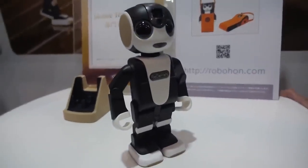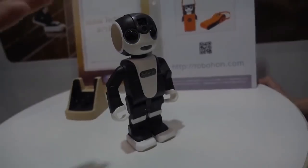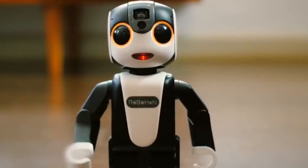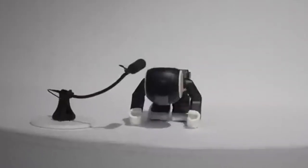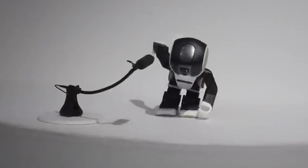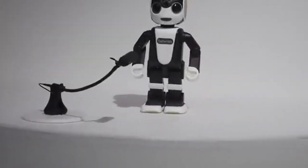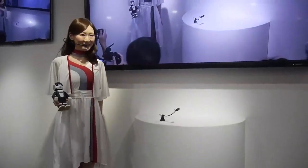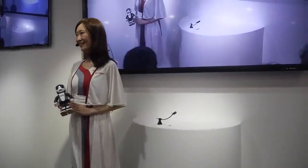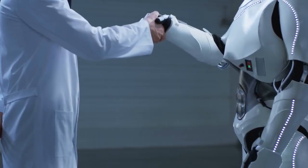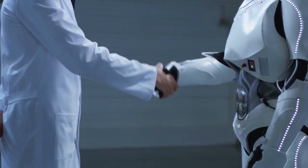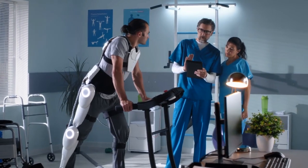Robohon, developed by Sharp and Tomotaka Takahashi, is a small humanoid robot that can function as a smartphone. It can make calls, send messages, and even take pictures. These robots are designed to mimic human behavior and are capable of performing a range of tasks, from walking and talking to serving as companions for the elderly. However, it is important to note that while these robots are advanced, they're not yet able to replicate all aspects of human behavior or intelligence.